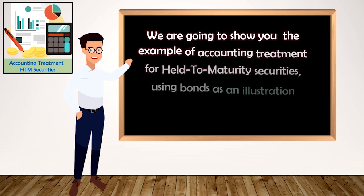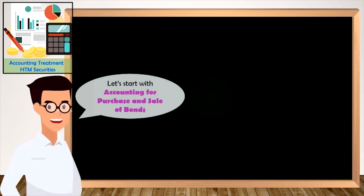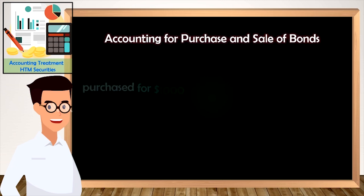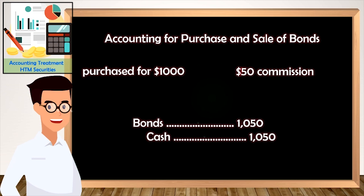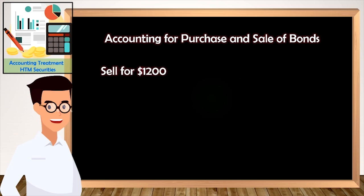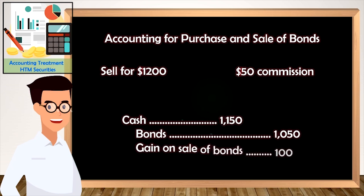We will show you an example of accounting for purchase and sale of bonds. These are the appropriate journal entries for a bond which was purchased for $1,000 with an amount of $50 paid to a broker as a commission. Next, these are the appropriate journal entries to record a transaction in case the issuer wanted to sell this bond for $1,200 with incurring brokerage commissions of $50.